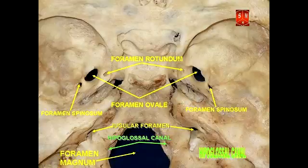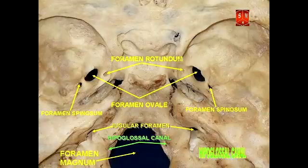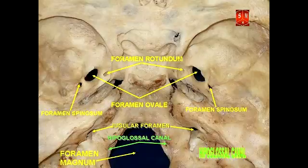What is the mnemonic to help you remember that the three divisions of cranial nerve 5 exit at different locations? The mnemonic is: the divisions of cranial nerve 5 exit owing to Standing Room Only. S is for superior orbital fissure, from which the ophthalmic nerve passes; R is for foramen rotundum, from which the maxillary nerve passes; and Only is for foramen ovale, from which the mandibular nerve passes.